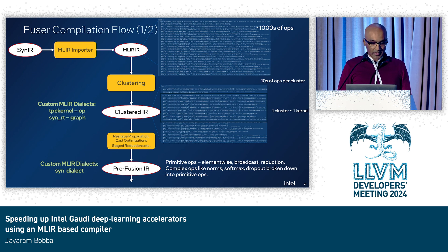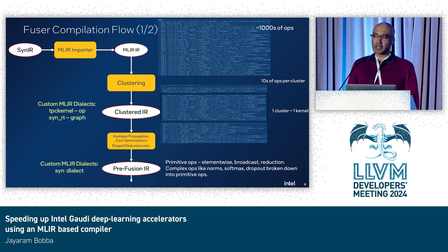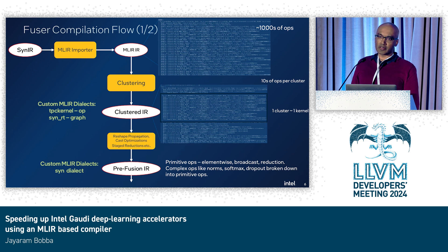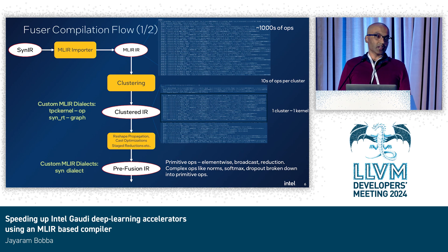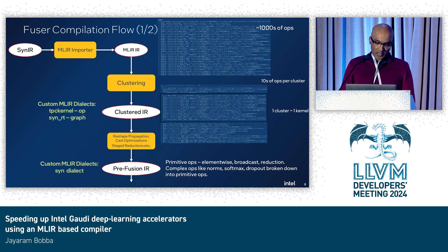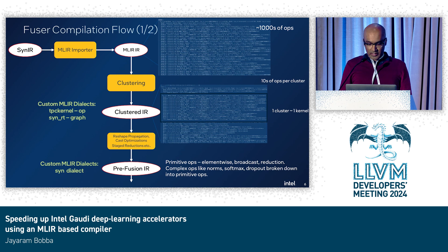After clustering, we then lower this into another custom dialect that we call the SYN dialect. The SYN dialect has primitive operations: element-wise operations, broadcasts, and reductions. More complex operations like normalization and softmax all get broken down into these primitive ops. We then do a series of high-level optimizations that are easy to do at this level, given that the data flow is very apparent. And then we are ready for our fusion.